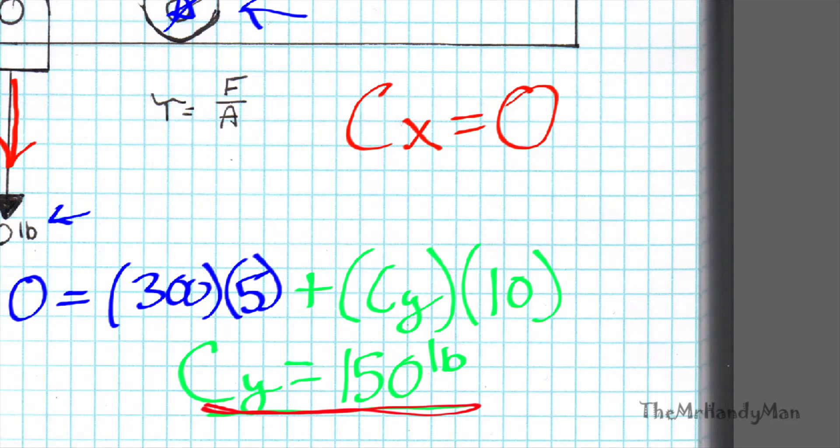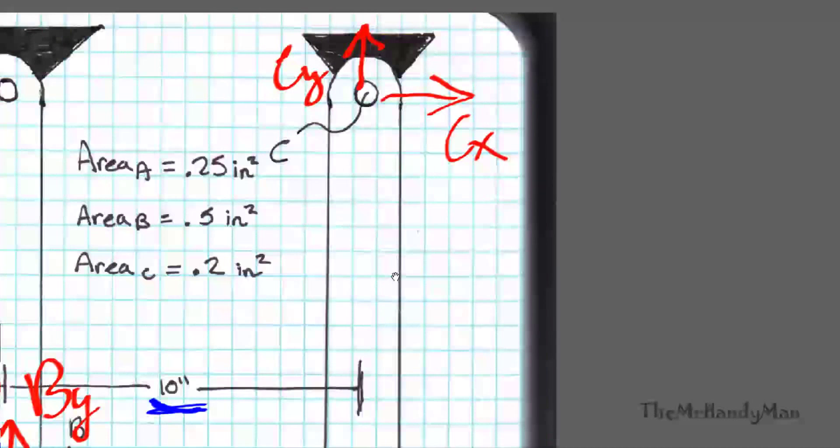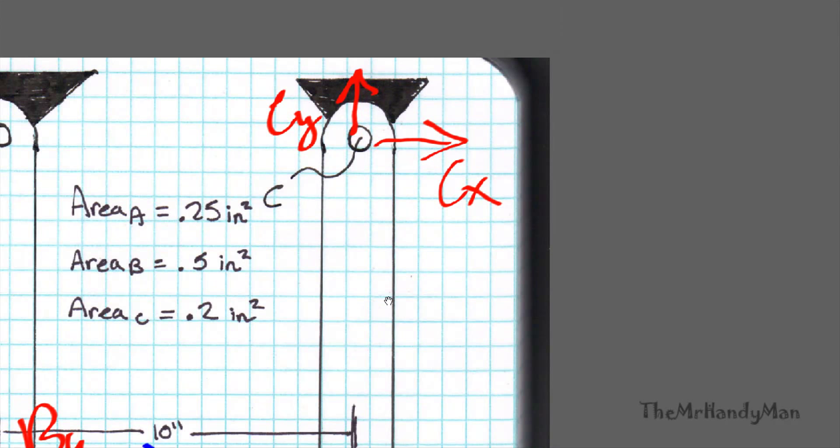So technically, and I'm just putting this in red so we can see it, it should be negative 150 pounds, just keeping the same convention. And really all that means is that it's not actually 150 pounds up, it's 150 pounds down. So we should imagine 150 pounds south here.